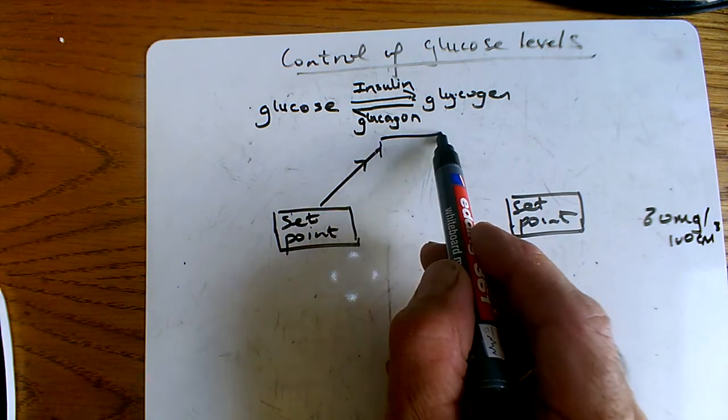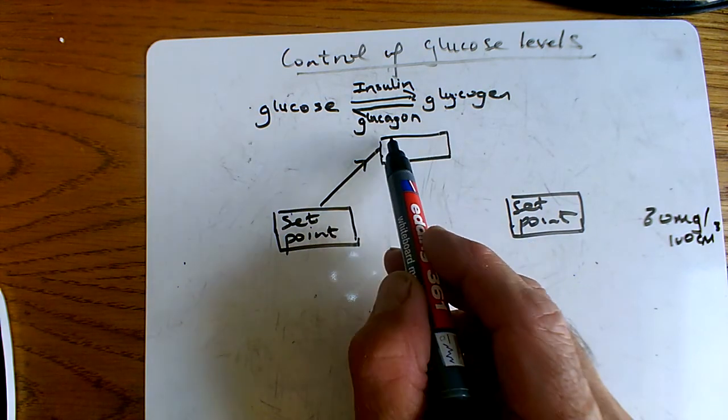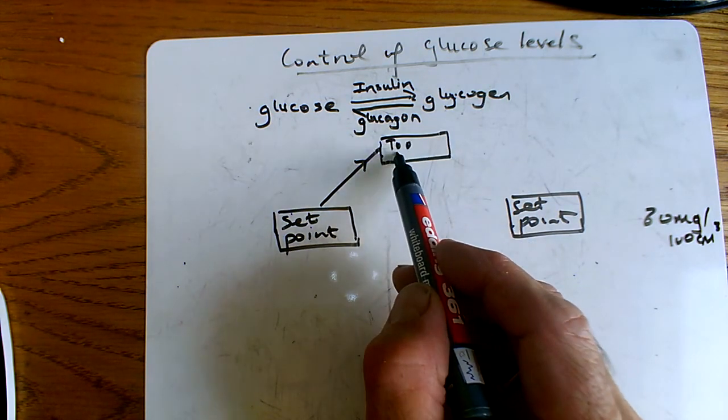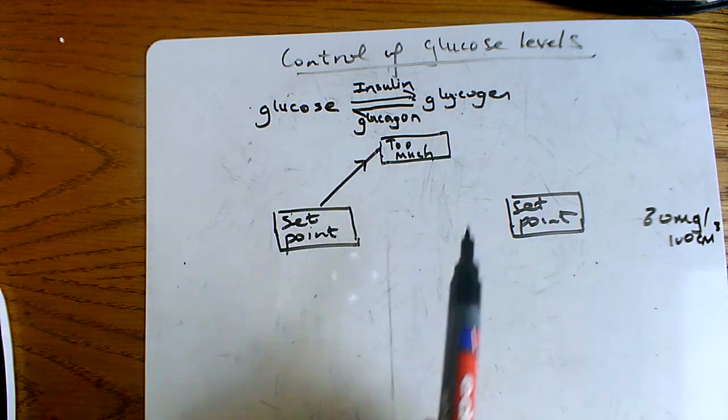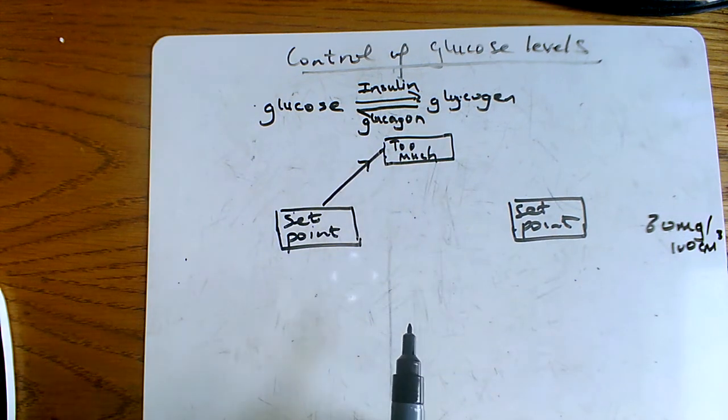So we're going to put a little box here and we're going to put in 'too much'. So you've got too much glucose in your blood; we've got to bring it back down again.